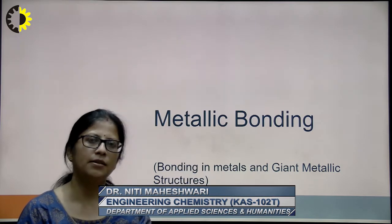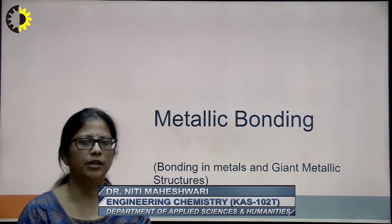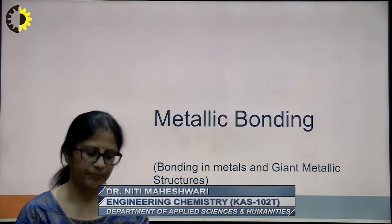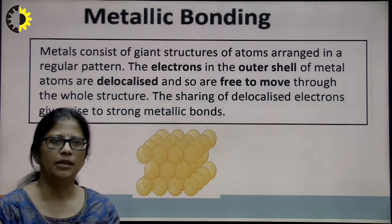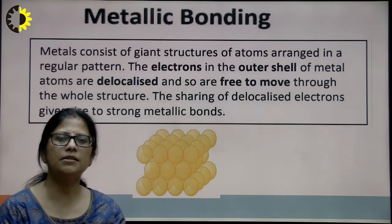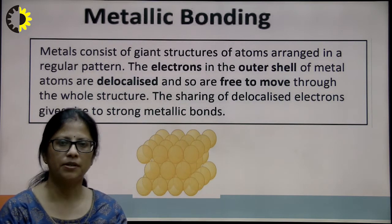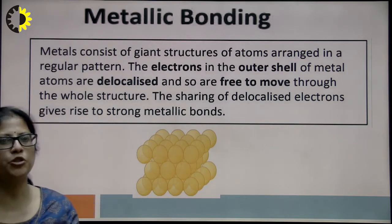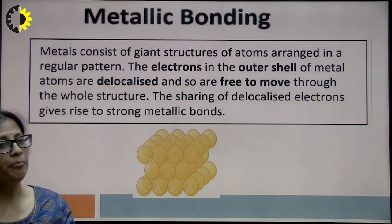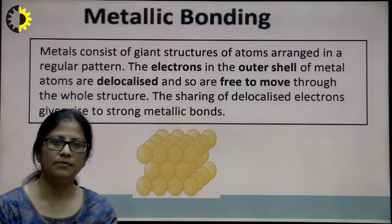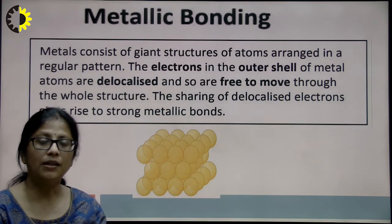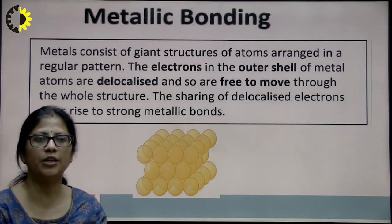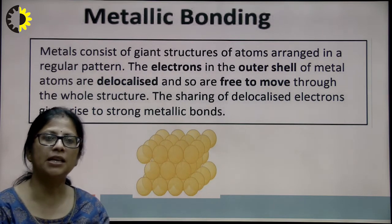It is also known as Molecular Orbital Theory Extended to the Solids. In metallic bonding, the metal consists of giant structures of atoms arranged in a regular pattern. The electrons in the outermost shell of metal atoms are delocalized and so they are free to move through the whole structure. The sharing of these delocalized electrons gives rise to strong metallic bonds.